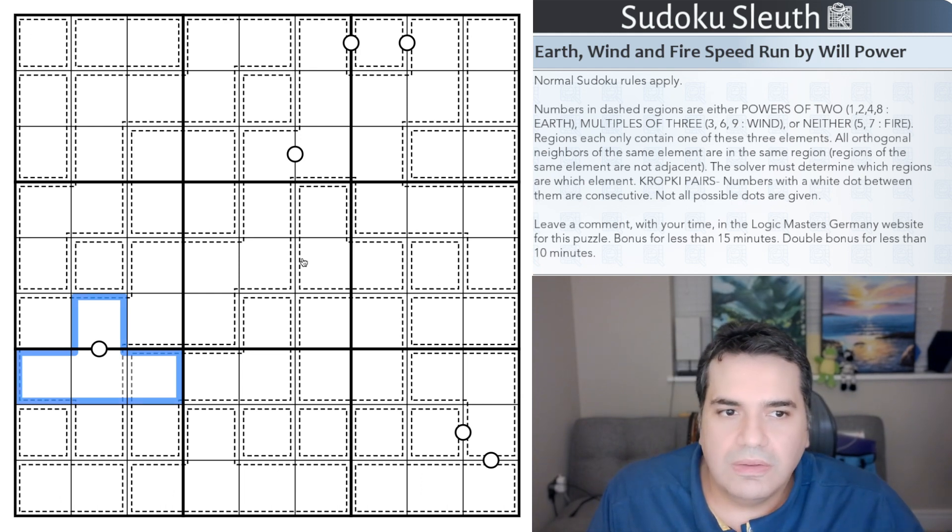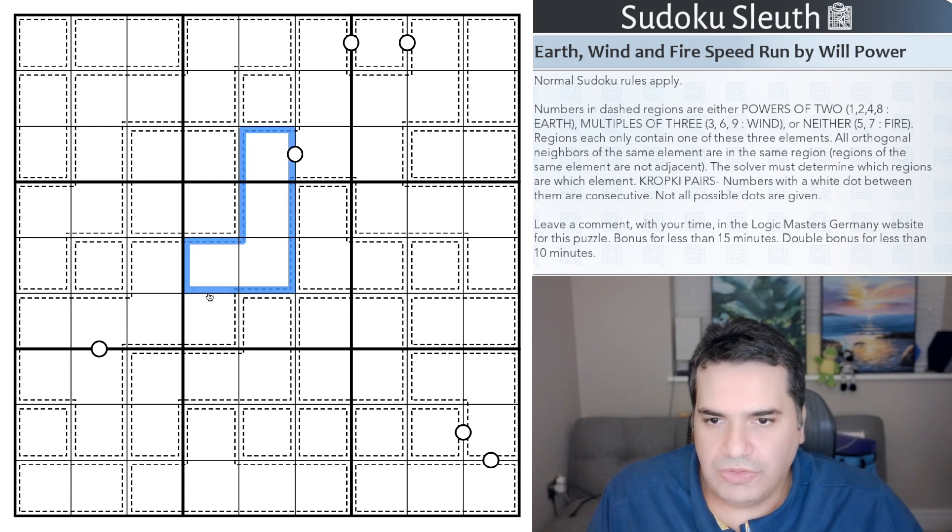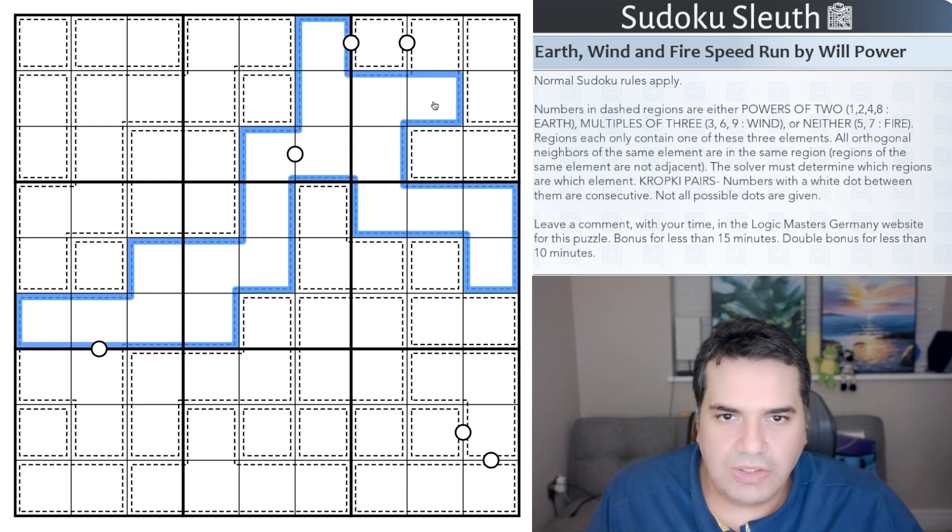Finally, neither would be fire, and that can only be five or seven. It's up to us to figure out which region is what. Once you've determined a region is one element, whatever the element is, that entire region has to be the same element.